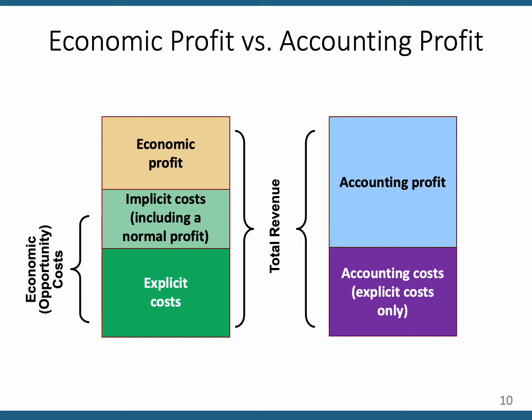If you're only thinking about accounting profit, then you have accounting costs — explicit costs — and the rest of total revenue represents accounting profit. However, if you're thinking like an economist, the explicit costs are the same amount. But the remainder is divided into implicit costs and economic profit. You also have to consider implicit costs and subtract those from total revenue before you get to economic profit.